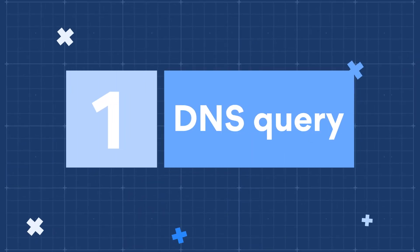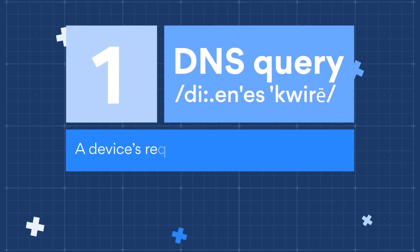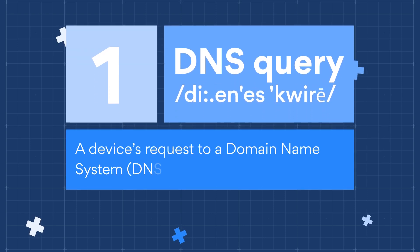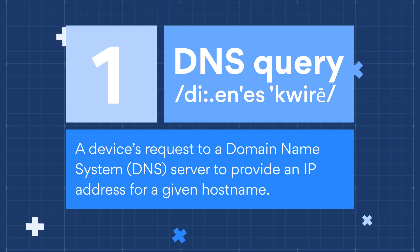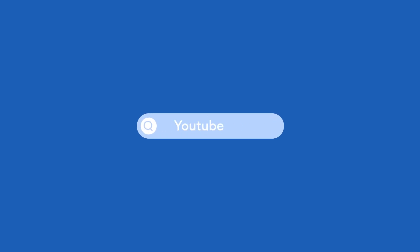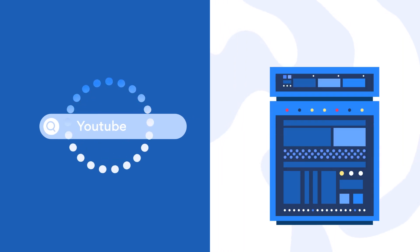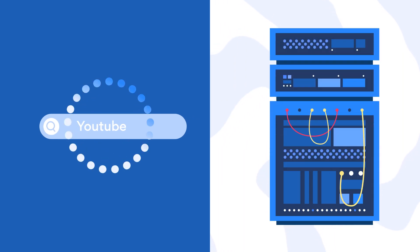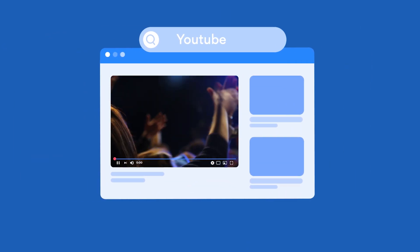Number 1: DNS Query. A DNS query, also known as a DNS request, is a device's request to a domain name system server to provide an IP address for a given hostname. For example, when you enter a website into your browser's search bar, like youtube.com, on your computer, it will send a question to the DNS server about which network or IP address the domain name belongs to so it can direct you there.